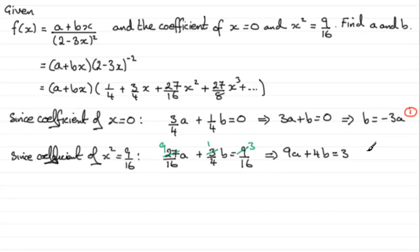Now I'll substitute equation 1 into equation 2. We get 9a + 4(-3a) = 3, so 9a - 12a = 3, which gives -3a = 3. Dividing both sides by -3, we get a = -1.